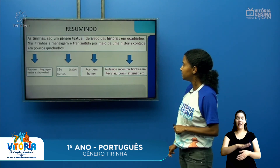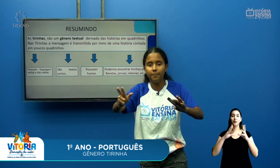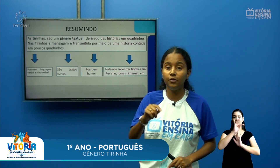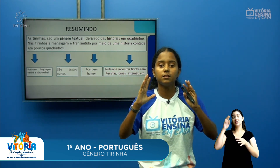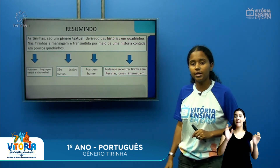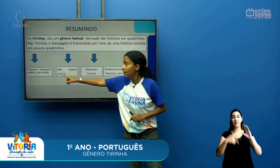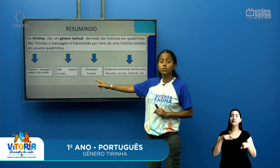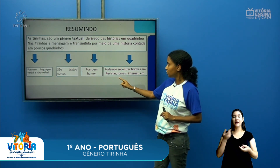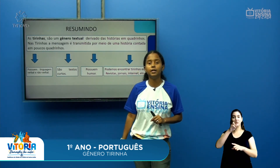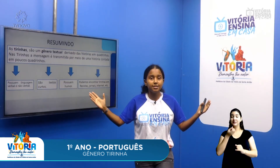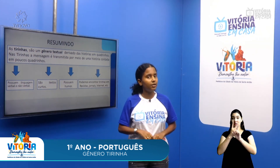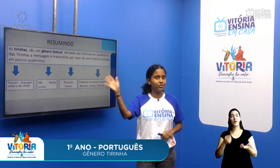Resumindo tudo que a gente aprendeu na nossa aula de hoje: nós aprendemos sobre o gênero textual tirinha, que é derivado das histórias em quadrinhos, só que é mais curto. Aprendemos sobre algumas características desse gênero, como: possui linguagem verbal e não verbal, é um texto curto, possui humor, e pode ser encontrado em jornais, revistas e na internet. Muito bem, crianças! Essa foi a nossa aula de língua portuguesa de hoje. Nos encontramos na próxima aula. Tchau, tchau!